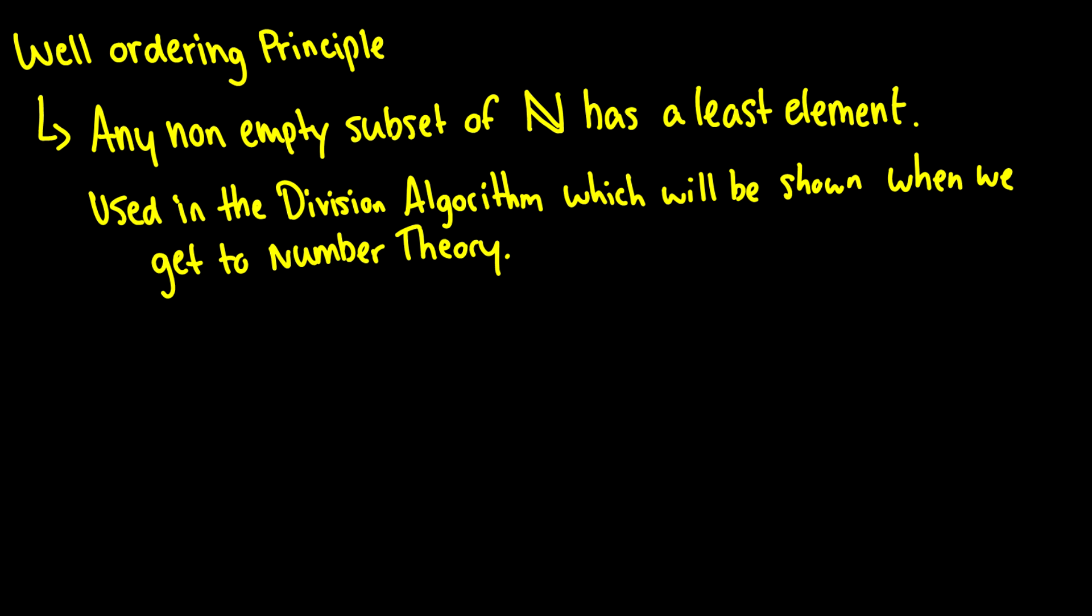And basically what it says is that any non-empty subset of the natural numbers has a least element. So, remember, the set of natural numbers is 1, 2, 3, all the way to infinity. So, if we have some subset, and the subset has at least one number, which means that number might be 1, it might be 4, it might be 9, who knows? There's going to be a smallest element, which means the number that is chosen leftmost is the smallest element.